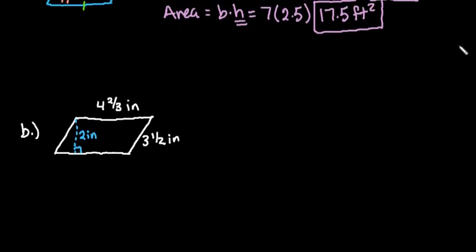Alright, let's look at the second one. We have another parallelogram that has a base of 4 and 2 thirds inches and a side length of 3 and a half. When we're finding the perimeter we would do 2 times 4 and 2 thirds plus 2 times 3 and a half. To make this easier, it's better to convert this into an improper fraction.